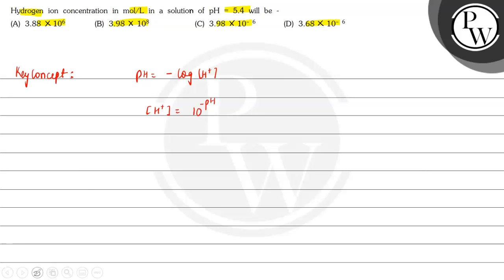So in this question, the value of pH is given as 5.4. That means hydrogen ion concentration will be equal to 10 raised to the power negative 5.4. And when we solve this, the value comes as 3.98 multiplied by 10 raised to the power minus 6. So if we see the options here, option C gives the exact value of hydrogen ion concentration in mole per liter.